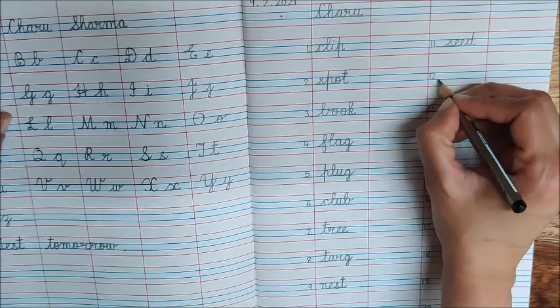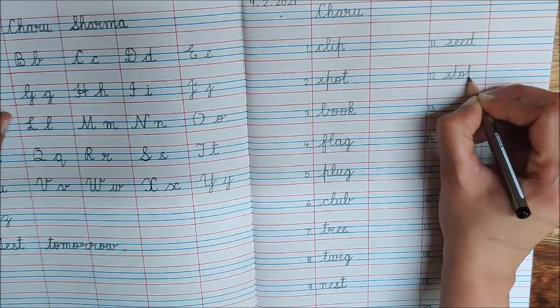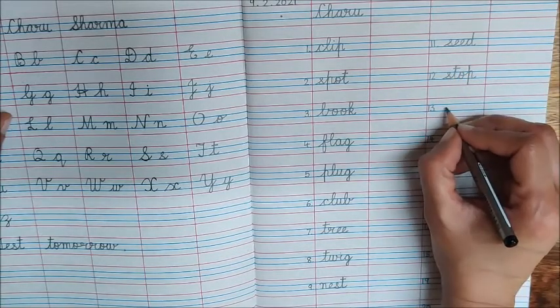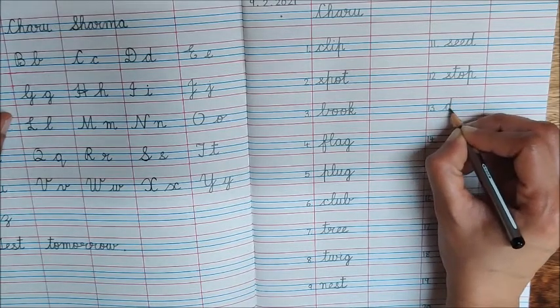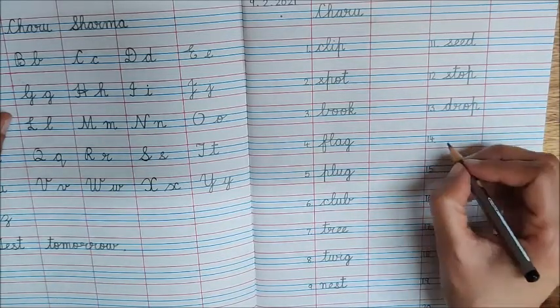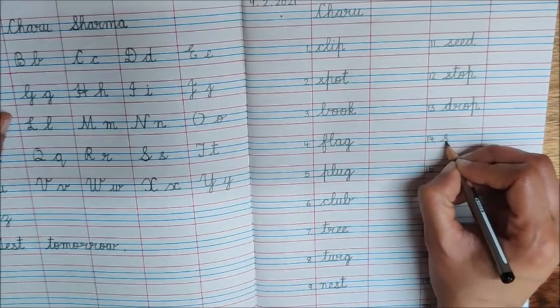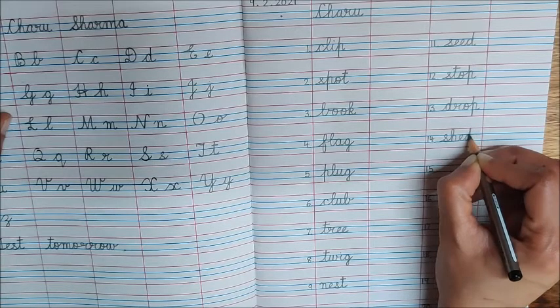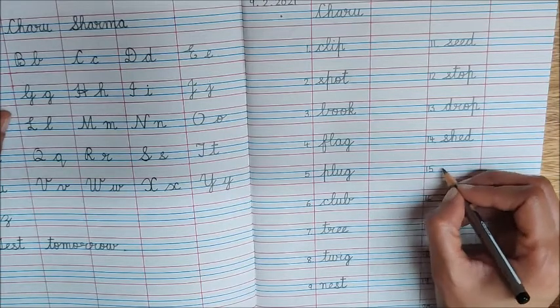Number twelve is stop. Number thirteen is drop. Number fourteen is shed. Number fifteen is smog.